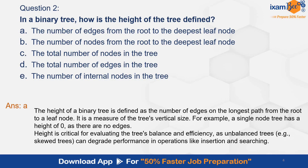The height of a binary tree is defined as the number of edges on the longest path from the root to a leaf node. It is a measure of the tree's vertical size. For example, a single-node tree has a height of 0 as there are no edges. Height is critical for evaluating the tree's balance and efficiency, as unbalanced trees can degrade performance in operations like insertion and searching.